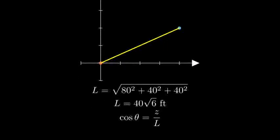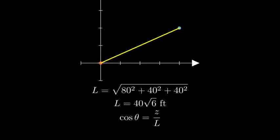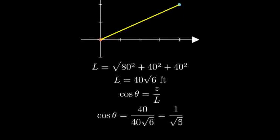For the angle with the Z axis, we can use the direction cosine formula. Cosine theta equals Z over L. Plugging in our values, we get cosine theta equals 40 over 40 times the square root of 6.